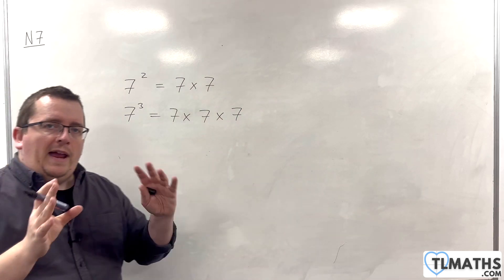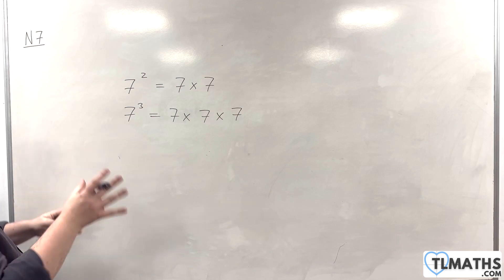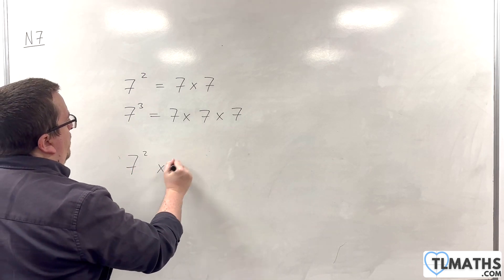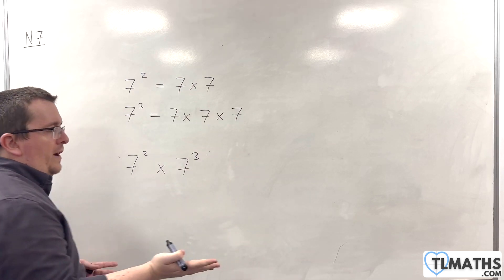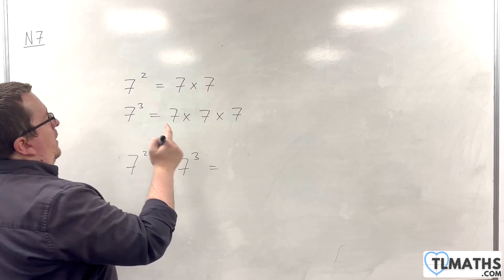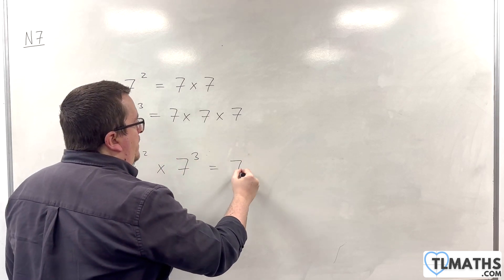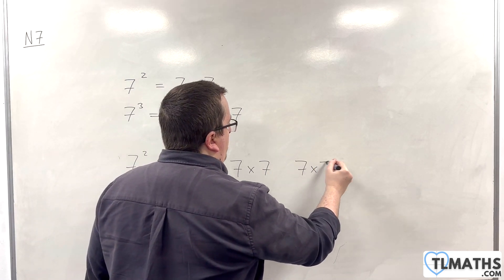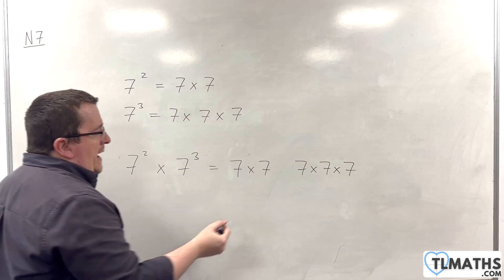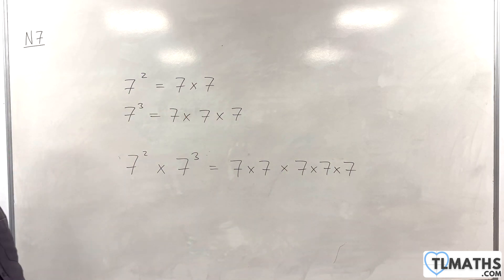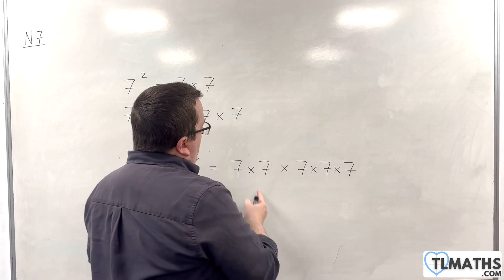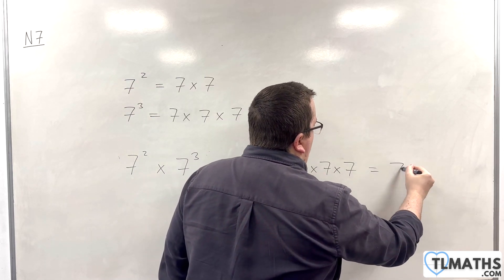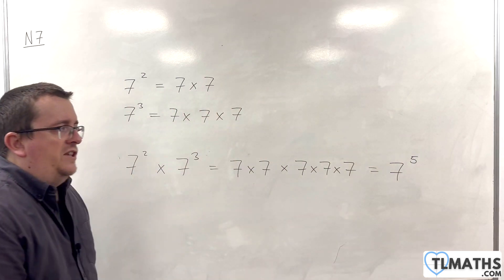So, what would happen if I were to multiply these two things together? If I had 7 squared and multiplied that by 7 cubed, what would I end up with? Well, I would have 7 times 7 from the 7 squared, and 7 times 7 times 7 from the 7 cubed, and I'm multiplying those two things together. So what I now have is 7 multiplied by itself 5 times, and so I can write that as 7 to the power of 5.